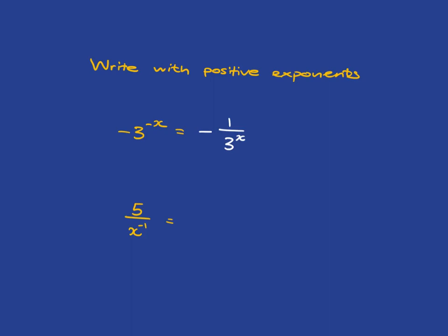And in this case here, we've got a 5, and then we've got x to the power of negative 1 at the bottom. So, you know that that is 5 over 1 over x, which is 5 divided by 1 over x, which is 5 times x over 1, which is just going to be 5x.